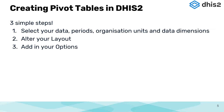Creating a pivot table in DHIS2 is simple — we have just three steps. First, you have to select the data, periods, and the org units — those are the three dimensions in DHIS2. Then you can alter the table layout as you wish. There are additional options which you can use to make the table look how you want and modify it accordingly. Just three simple steps, but you have to remember these steps.